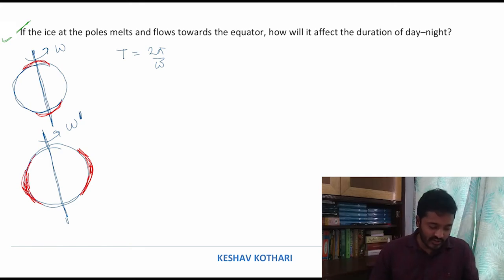The first thing which I say here is: the initial moment of inertia is I₁, the final moment of inertia is I₂. So the first thing I write is I₂ is greater than I₁. In the first case, the mass is on the axis of rotation, so the moment of inertia is less.